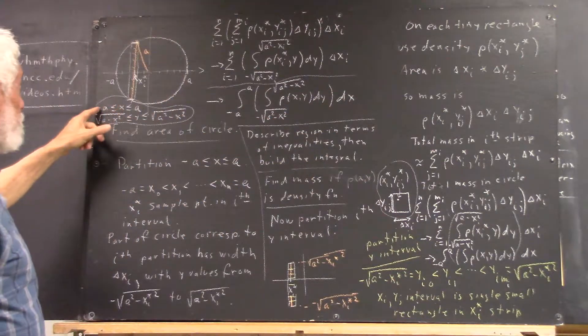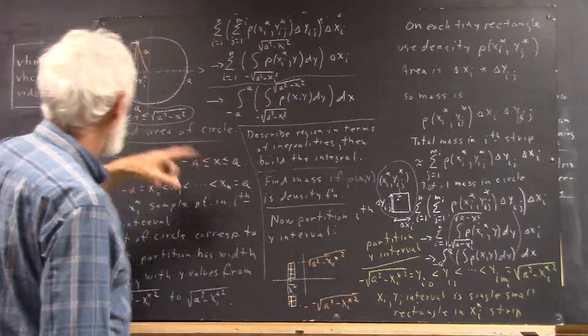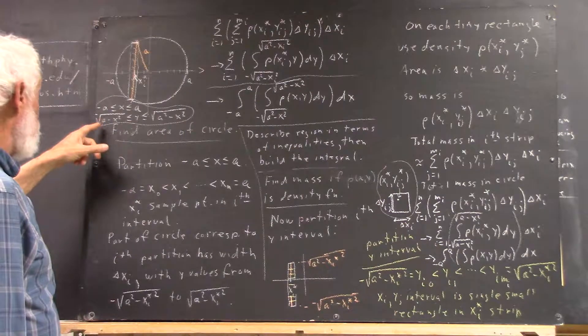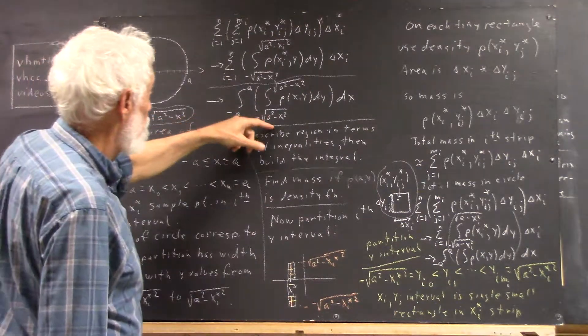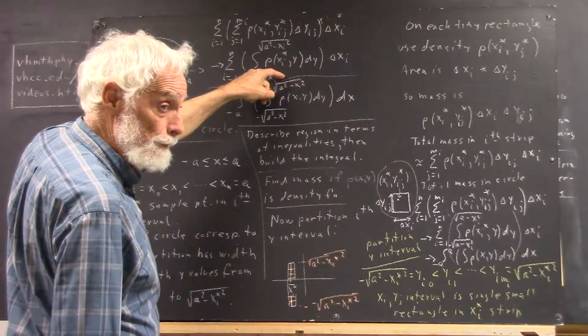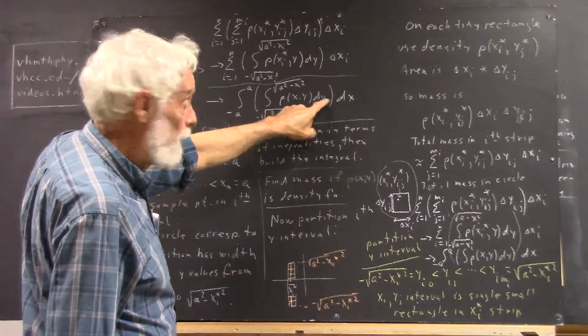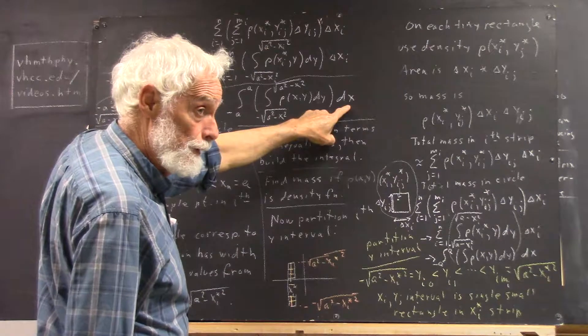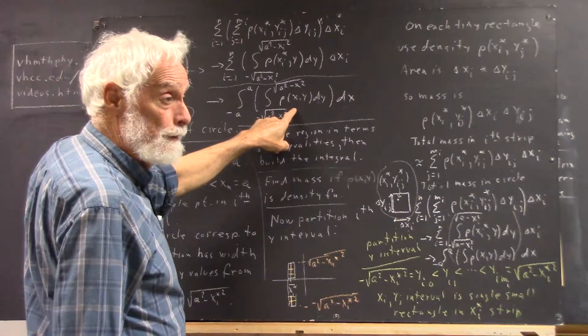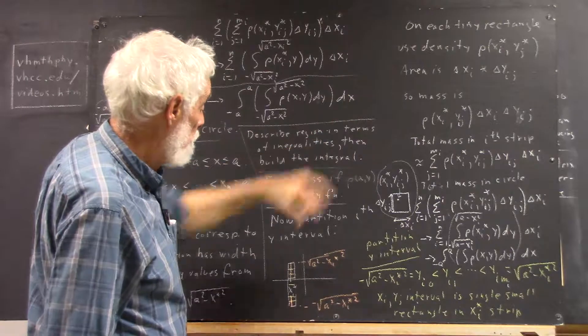The limits on x are negative a to a. The limits on y are negative square root of a squared minus x squared to square root of a squared minus x squared. And we're integrating the inner integral with respect to y, the outer integral with respect to x. Whatever function it is we're integrating, that's going to be it.